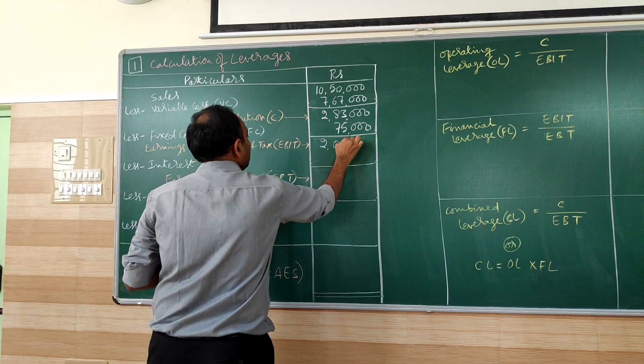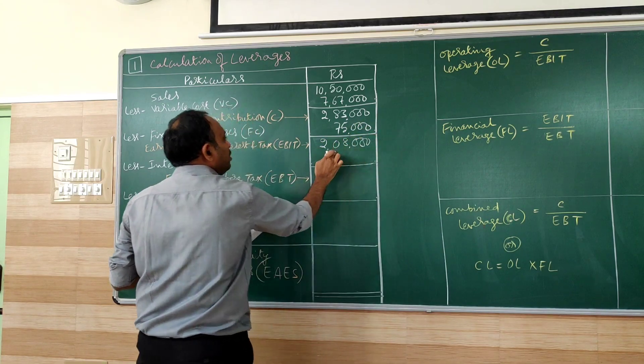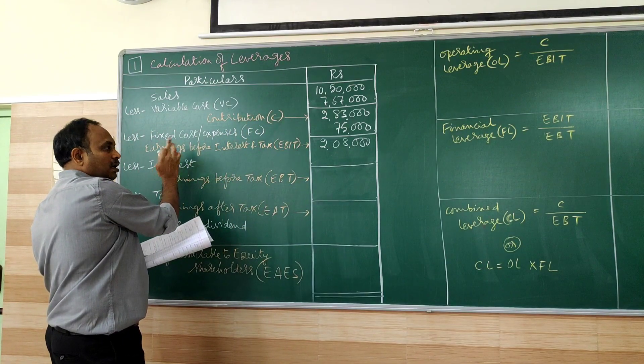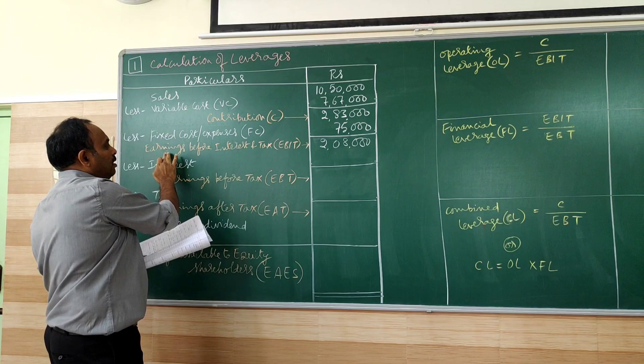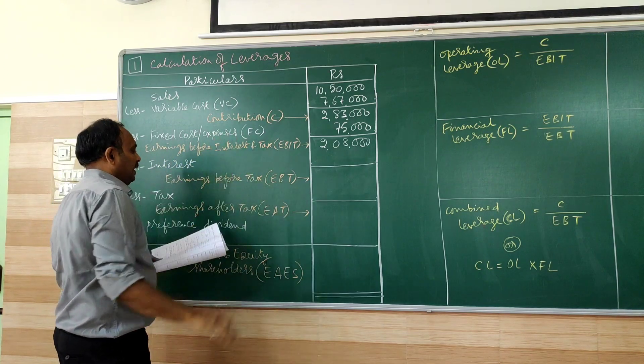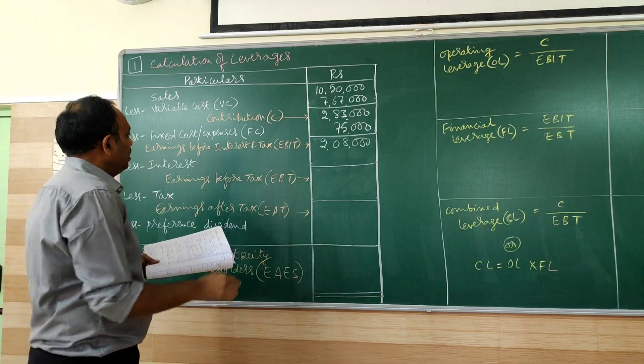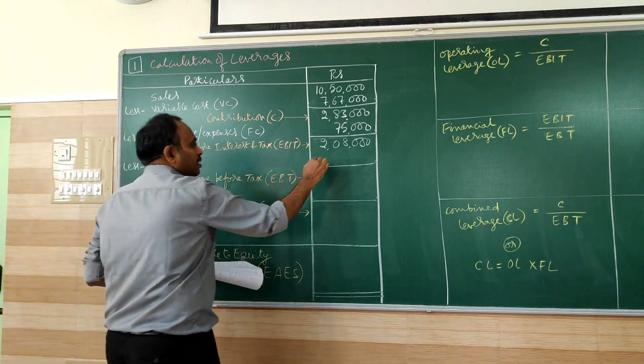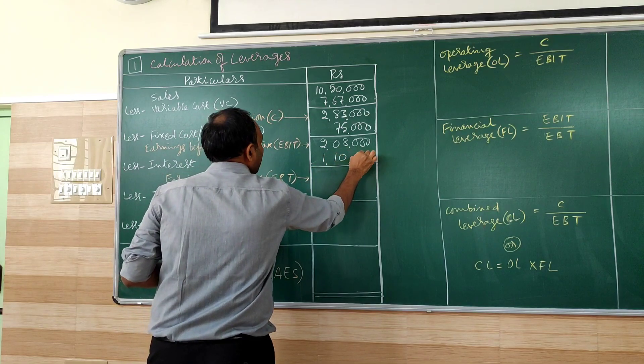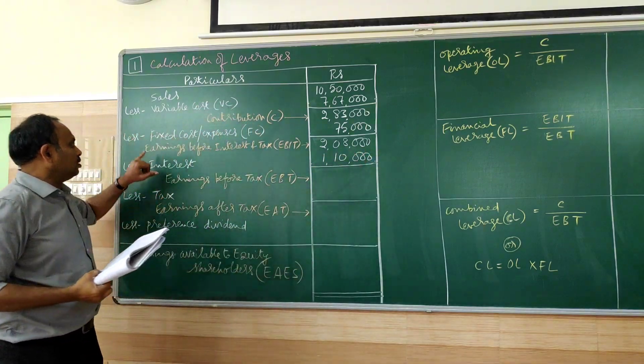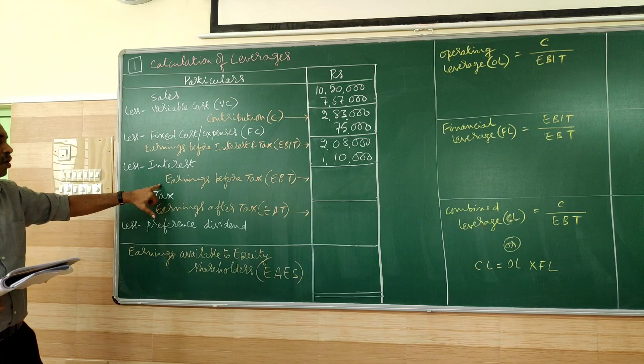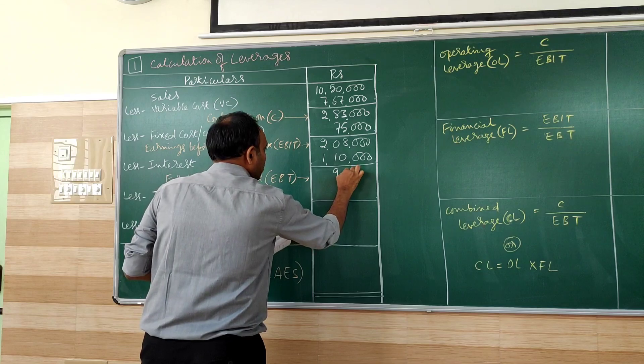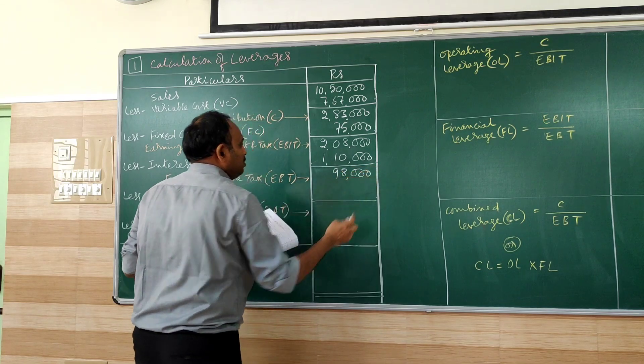Next, less fixed cost or fixed expense given in the problem as 75,000. The result 2,08,000 after deducting, we call it as EBIT, or we can expand and learn earnings before interest and tax. Then the next one is the interest, given in the problem as 1,10,000.